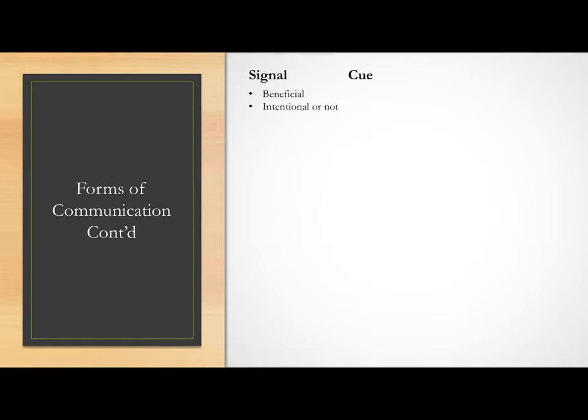A cue, on the other hand, is a message that an animal sends out which is detrimental to the sender, like the animal didn't mean to send out this information, but now someone's heard it and they'll use it. A cue is not a message that the sender has evolved to send, but the receiver may evolve to hear, or see, or smell that message.